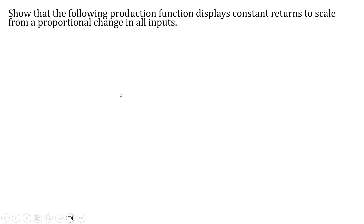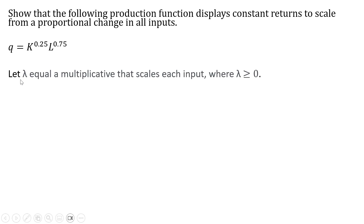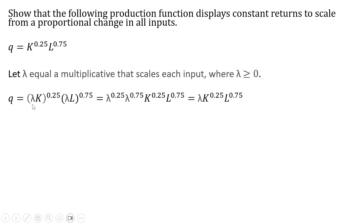Here's another example with a slightly different production function. Once again, we'll have lambda equal our multiplicative, and so we're going to multiply each input by lambda. This lambda here is going to be raised to 0.25, along with this lambda over here being raised to 0.75. Bringing out the lambdas in front, we can add the exponents on the lambda terms together to get just lambda.